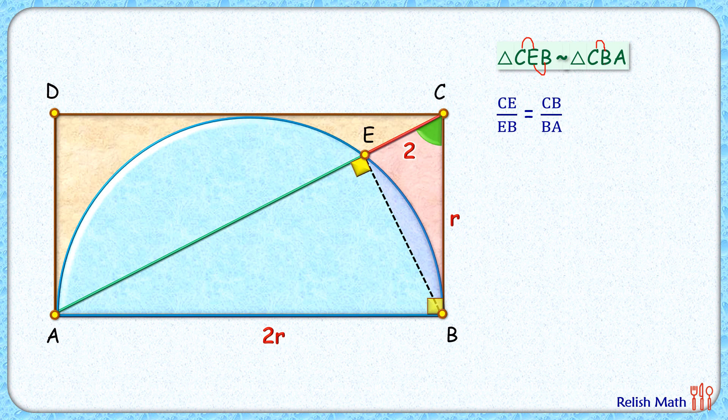Now here, CE length is 2, EB we are not aware of. How about CB? CB is R, and BA is 2R. Solving it, we'll get EB length as 4 centimeters.